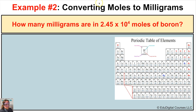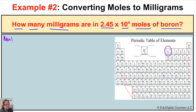In this second example it says: how many milligrams are in 2.45 times 10 to the fourth moles of boron? The first thing we do is look at boron on our periodic table. The number below the chemical symbol tells us that for every one mole of boron it's going to have a mass of 10.81 grams, and that mass would contain Avogadro's number of atoms of boron.